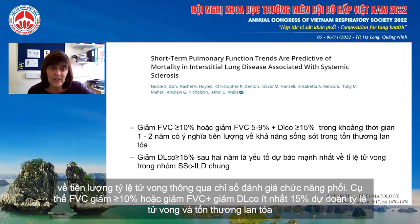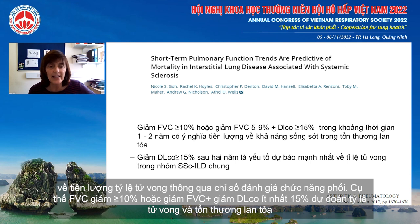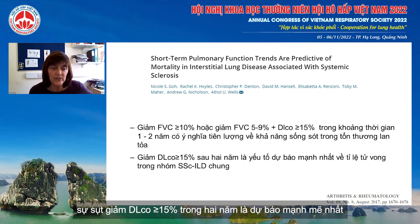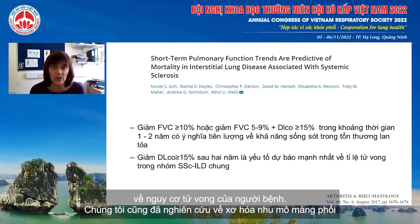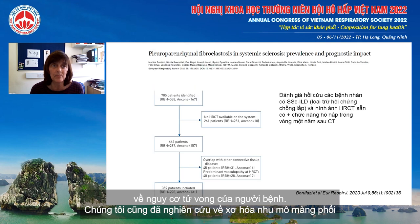A decline in FVC by at least 10%, or a marginal decline in FVC coupled with DLCO decline of at least 15%, predicts mortality in extensive disease. A decline in DLCO of at least 15% at two years was the strongest predictor of mortality.